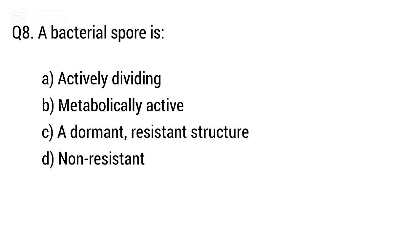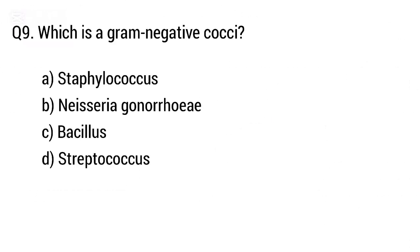Question 8: A bacterial spore is. The right answer is Option C, a dormant resistant structure. Question 9: Which is a gram-negative coccus?